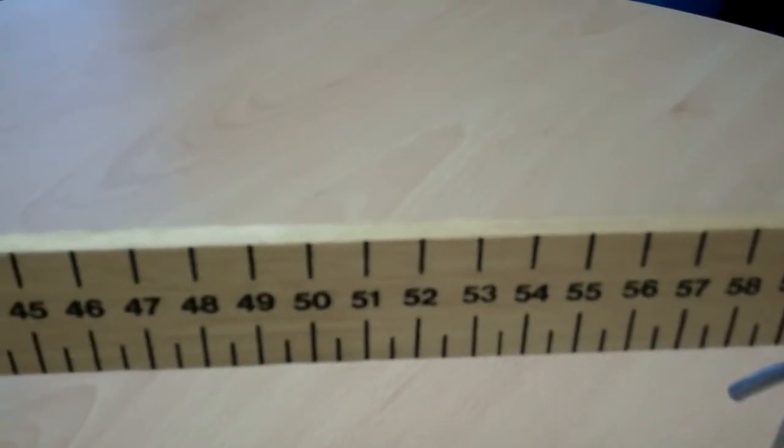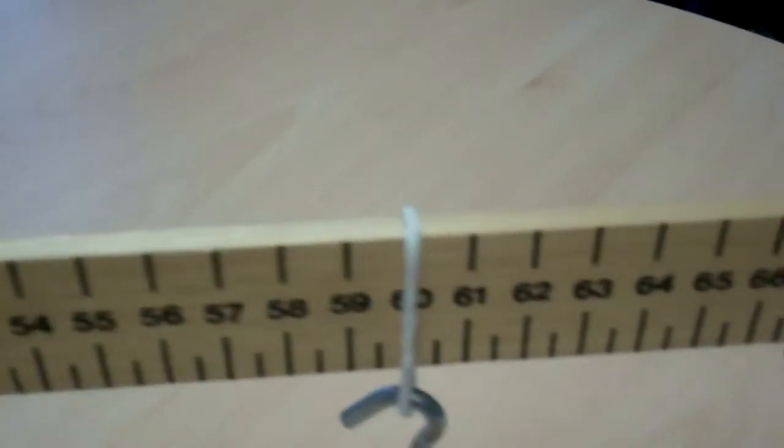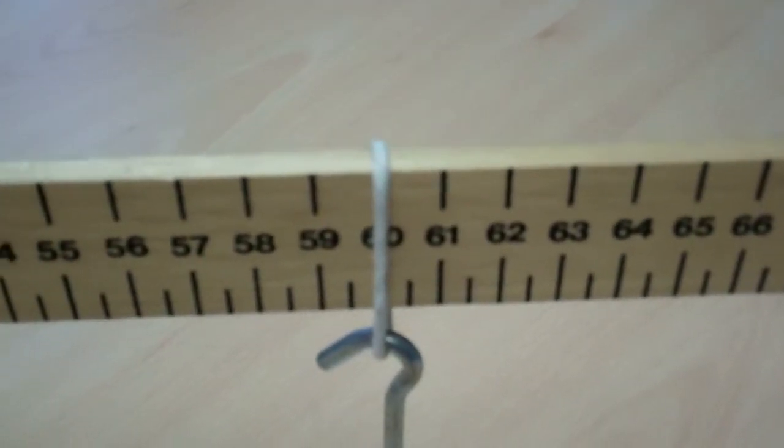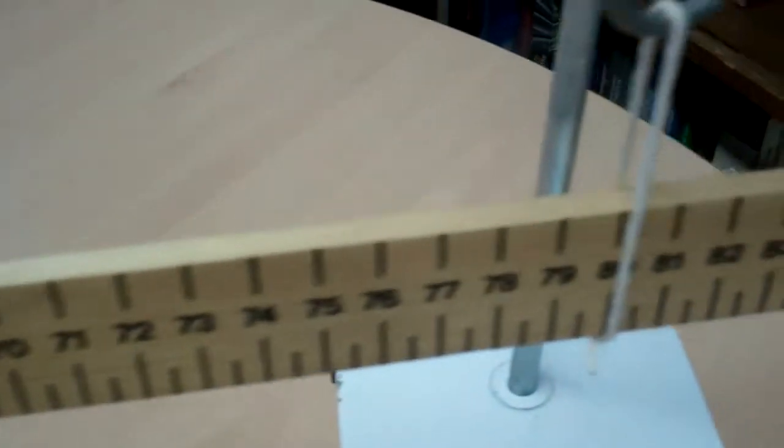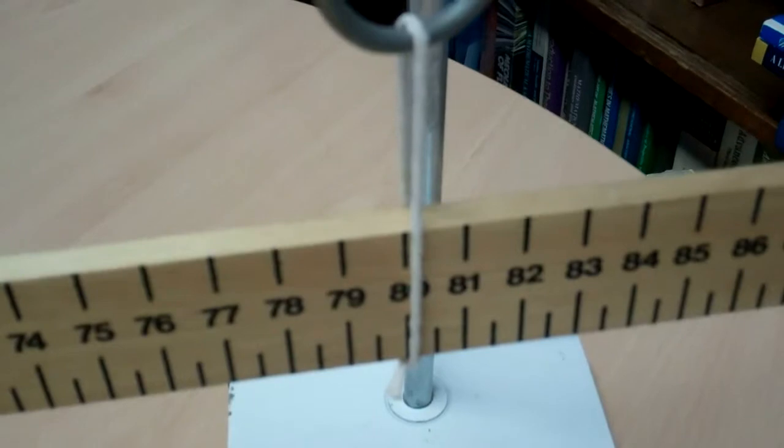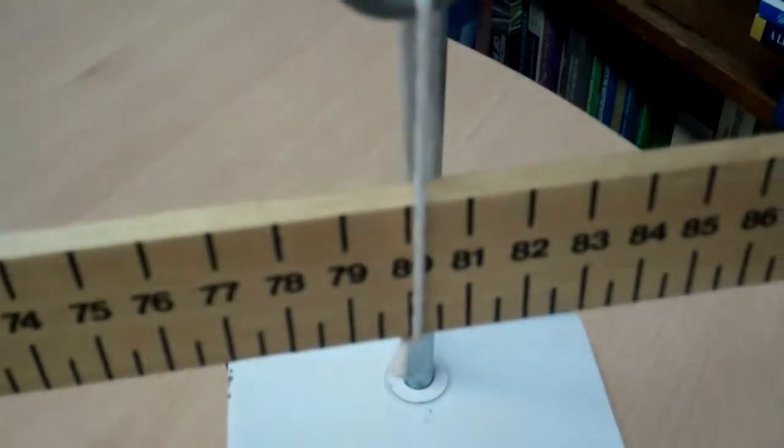The weight of the ruler, although you can't see it, acts at the 50 centimetre mark. The 400 gram mass is suspended at the 60 centimetre mark. And the other support is at the 80 centimetre mark.